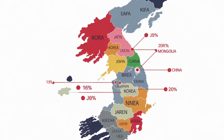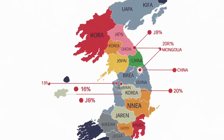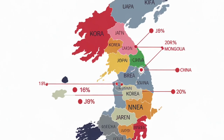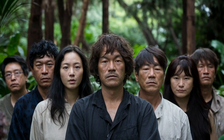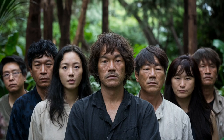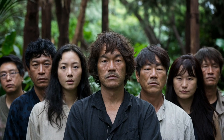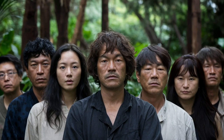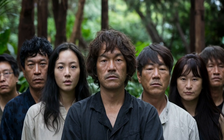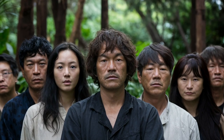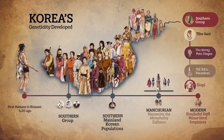While many East Asian populations have been studied for their genetic diversity, Korea stands out as a unique case, shaped by ancient migrations, environmental changes, and cultural exchanges. Situated at the confluence of powerful neighbors like China, Japan, and Russia, Korea's genetic history offers a window into the wider migrations that shaped not just the Korean Peninsula, but the entire East Asian region.